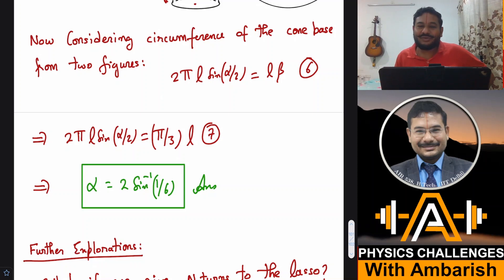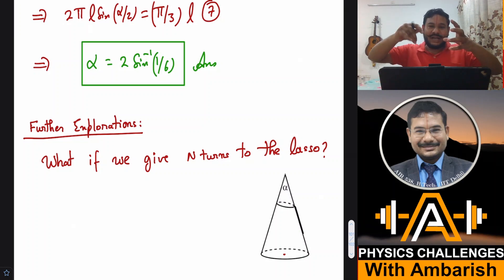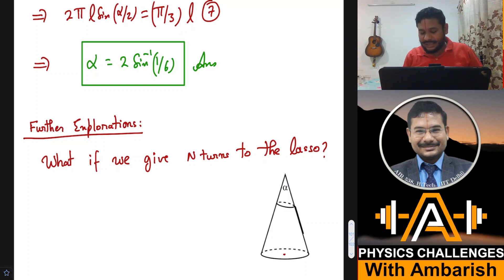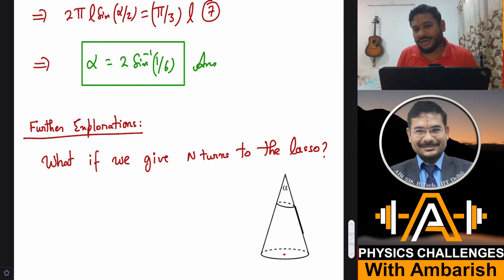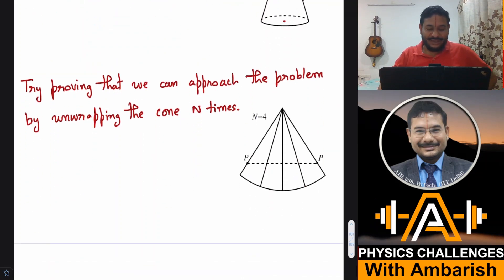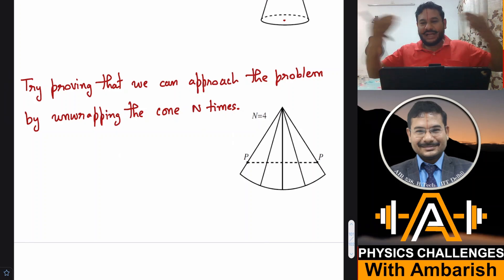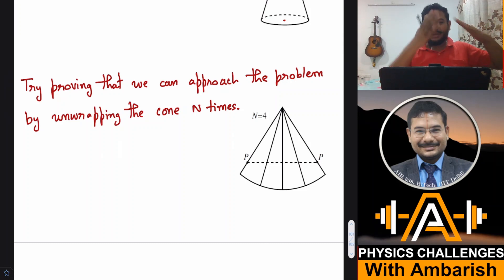If you want further exploration, consider a modification: instead of a single turn of the lasso, give it multiple turns — two, three, or four wraps around the hill. You can try this with both the cheap lasso from yesterday and the deluxe lasso, with n number of turns. As a hint, this problem can be approached by unwrapping the cone n number of times. For two turns, you unwrap once and then again, forming the total net of a twice-wrapped cone, and proceed similarly.